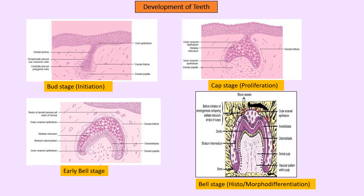The bell stage is the stage of histodifferentiation and morphodifferentiation. In morphodifferentiation the shape of the tooth is determined, and in histodifferentiation different cells are formed: odontoblasts making dentine, cementoblasts making cementum, ameloblasts making enamel matrix. For exams, disturbances in the bud stage can cause missing teeth or supernumerary teeth; cap stage disturbances lead to fusion or gemination; bell stage disturbances can lead to amelogenesis imperfecta or dentinogenesis imperfecta.